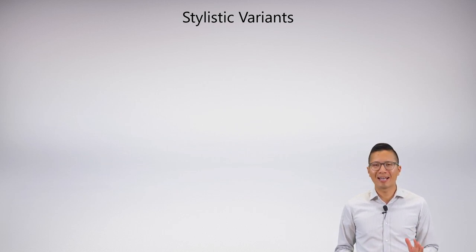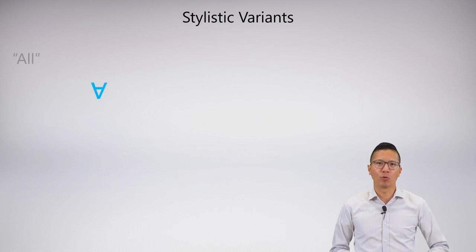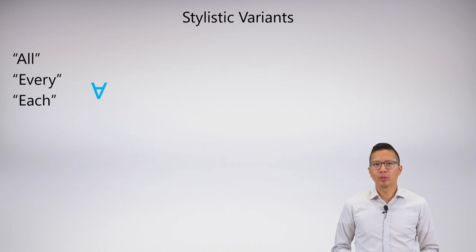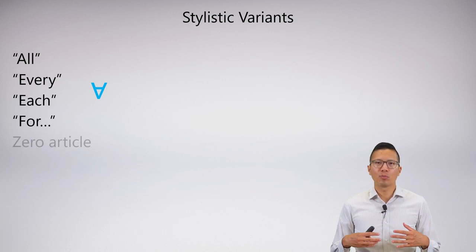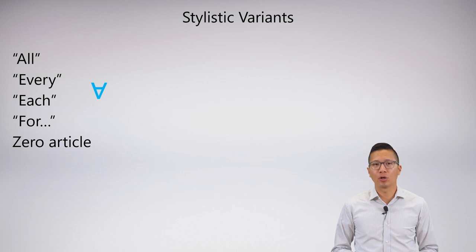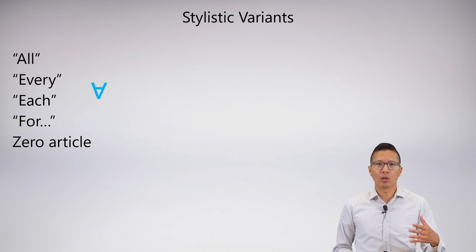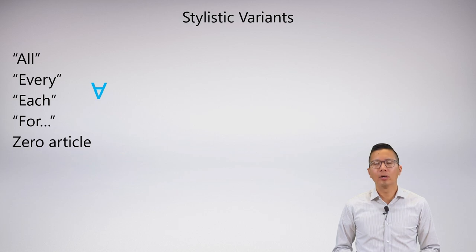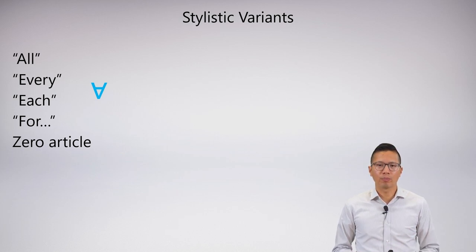Unfortunately, it's not as nice as it was before. So let's start with the universal. You've actually heard me use a bunch of the stylistic variants of the universal already — all, every, each, for all, for every, and so on. So it's not too complex with the universal.